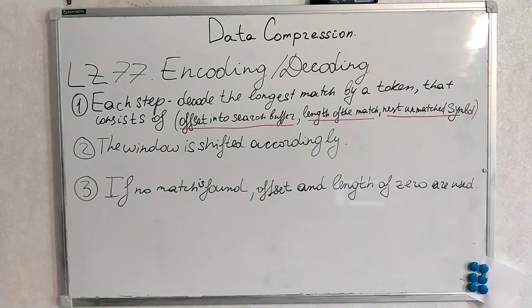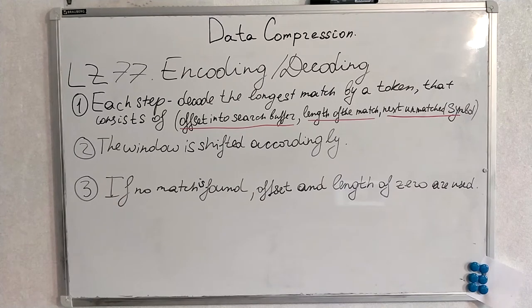Then the window, sliding window we are using also LZ77 is sometimes called sliding window. The window shifted accordingly and if no match is found offset and length of zero are used.